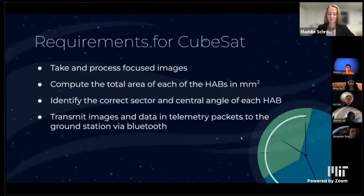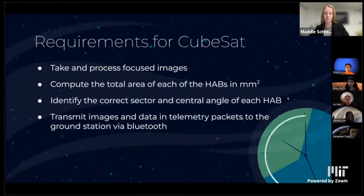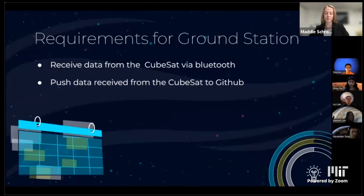Some of the requirements our team came up with: the CubeSat shall take focused images with as much resolution as the link budget allows. Pictures are scaled to 750 by 670 to cover as much space as possible. It shall process images and compute the total area of each HAB in millimeters squared, determine the location in terms of central angle and sector, identify the correct sector, and give the location in degrees. The CubeSat shall also be able to transmit data to the ground station via Bluetooth.